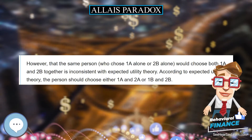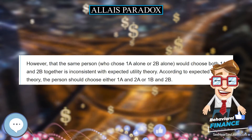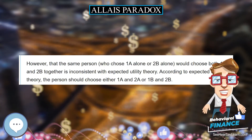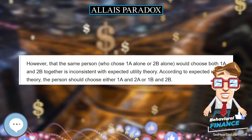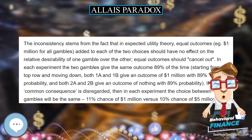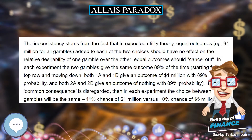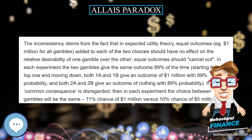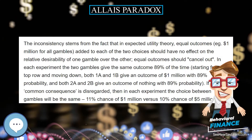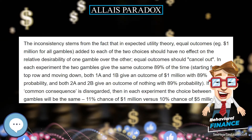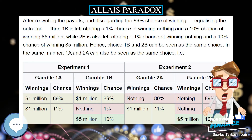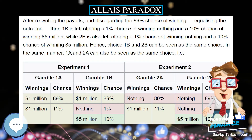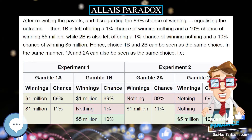Statement of the problem. The Allais Paradox arises when comparing participants' choices in two different experiments, each of which consists of a choice between two gambles, A and B. The payoffs for each gamble in each experiment are as follows.